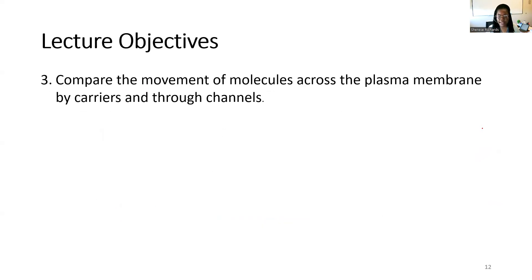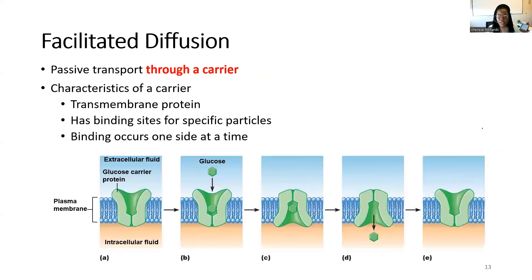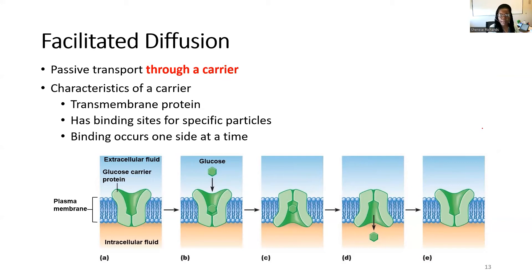Moving on to objective three: comparing the movement of molecules across the plasma membrane by carriers and through channels. This gets into the other two examples of passive transport. We had passive transport with three examples: simple diffusion, facilitated diffusion, and movement through channels. Simple diffusion needed no help — no carriers, no proteins, no channels — particles went right through the membrane.